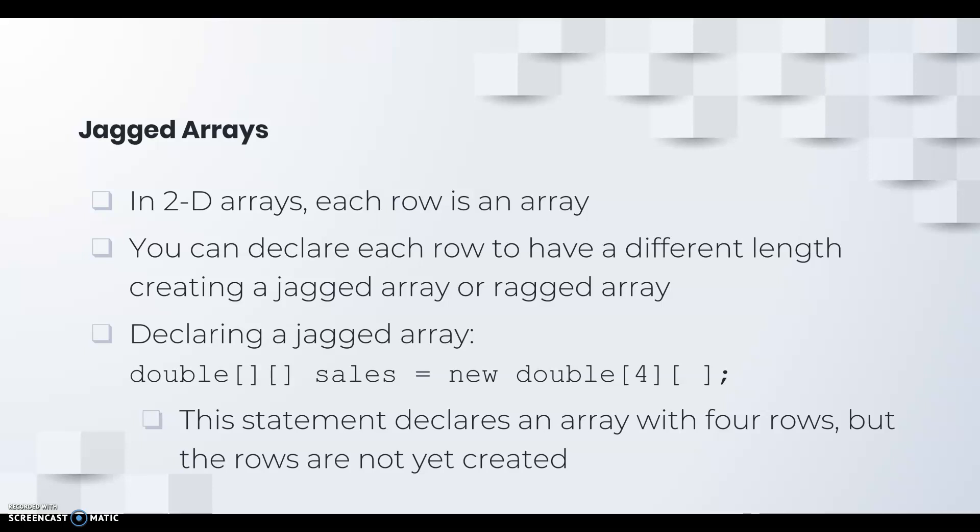Declaring a jagged array would look something like this. For example, we've got a double 2D array called sales, and we're using the assignment operator and the new keyword, and it's a new double, and it's going to have four rows, but we haven't told it how many columns it's going to have. This statement declares an array with four rows, but the rows are not yet created.